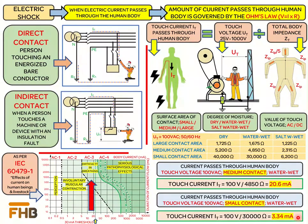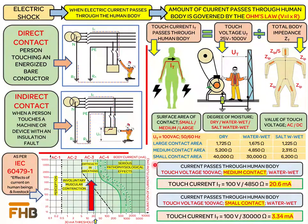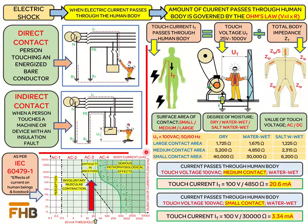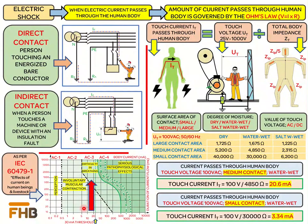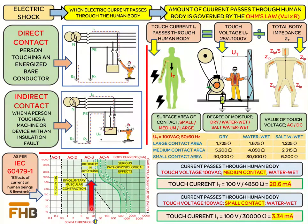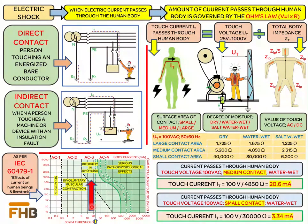As discussed earlier, the danger to a person from electric current mainly depends on the magnitude and duration of the current passing through the body. The time-current zone chart in IEC 60479-1 summarizes the effects of electric current on the human body, indicating the effects of AC current flowing from the left hand to the feet. All effects are highly dependent on current magnitude and its duration. From the chart, for the same amount of current the zone changes with increasing time duration, meaning the effects become worse as duration increases.